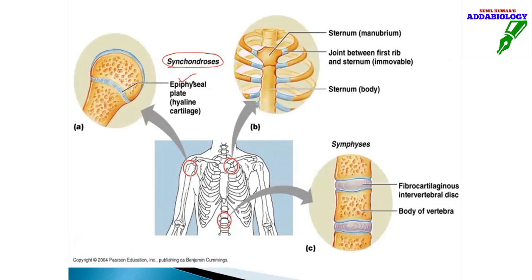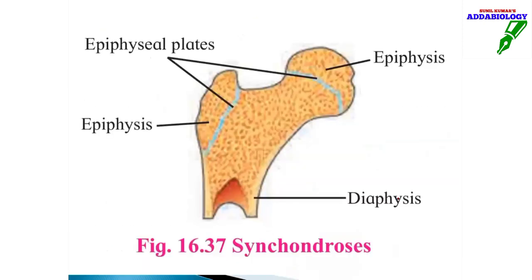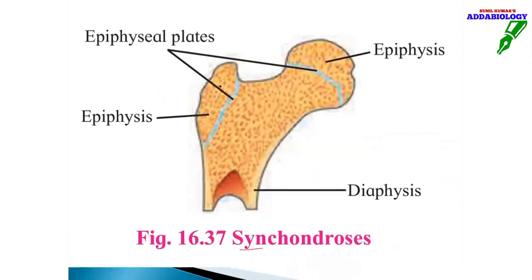Examples of synchondrosis: first, the epiphyseal plate containing hyaline cartilage; second, the joint between the first rib and the sternum, which is immovable, while the rest of the ribs and sternum joints are slightly movable. Then there is symphysis — the vertebral column has seven cervical, twelve thoracic, five lumbar, five sacral, and one coccyx vertebrae, and they are all symphysis — slightly movable.